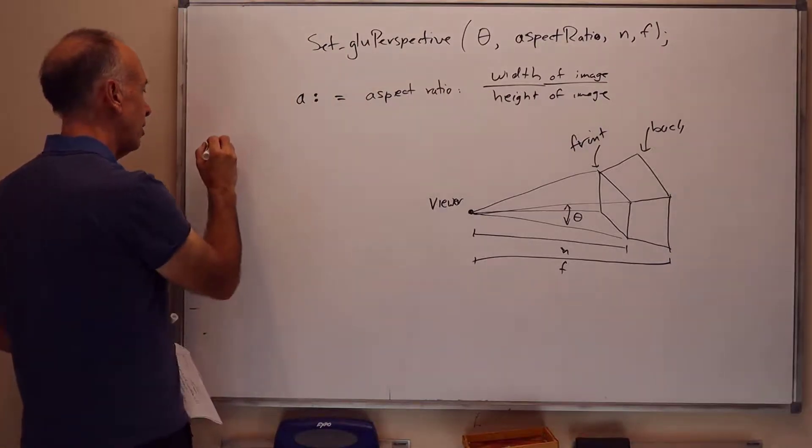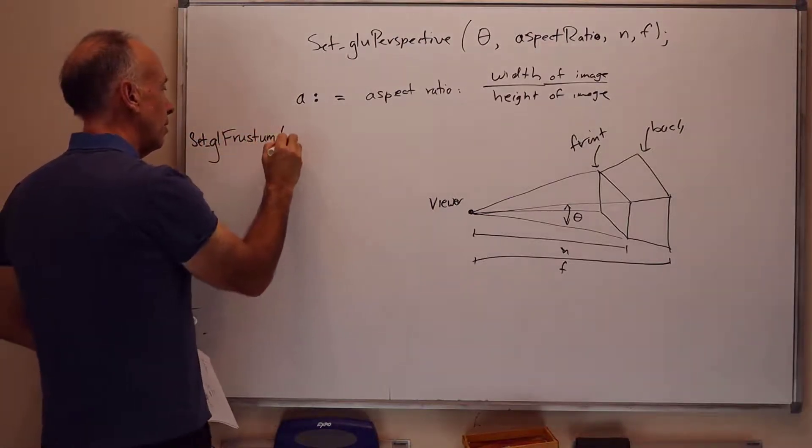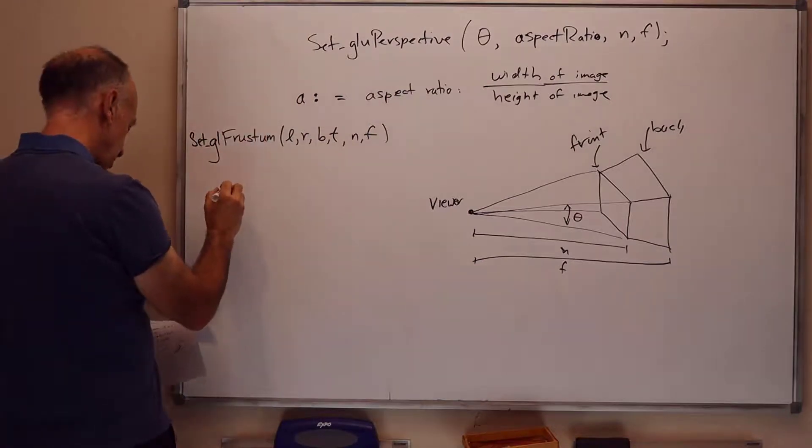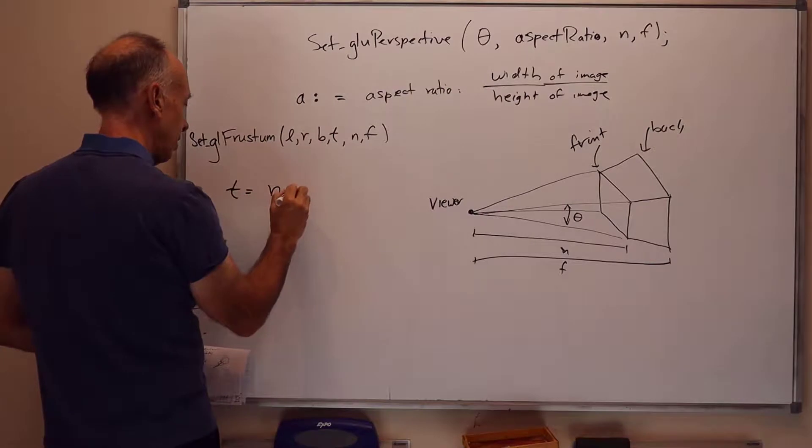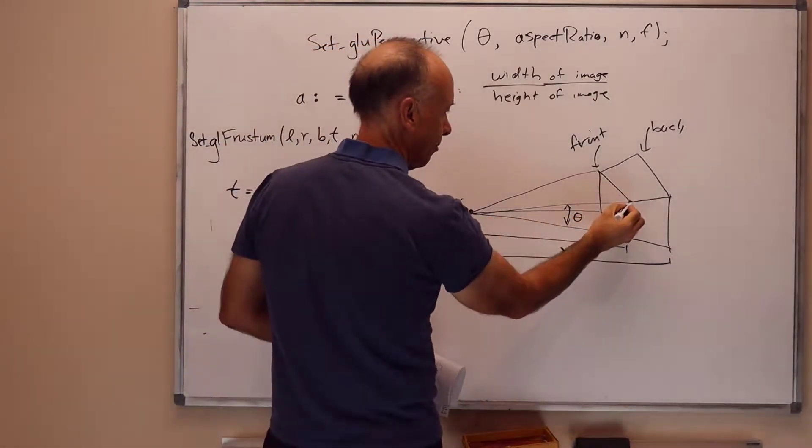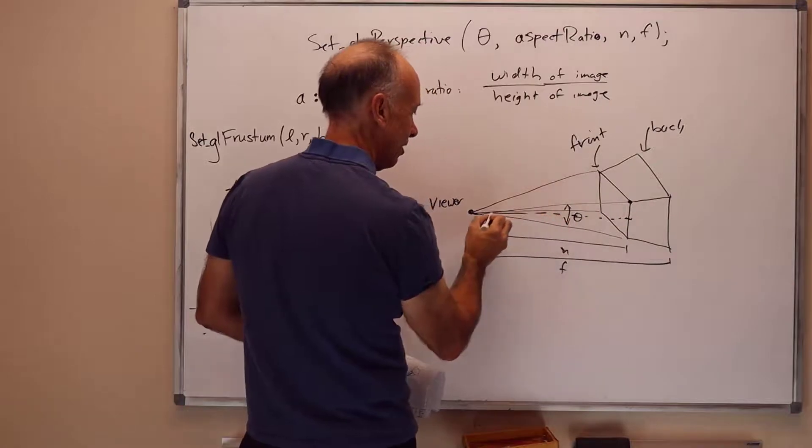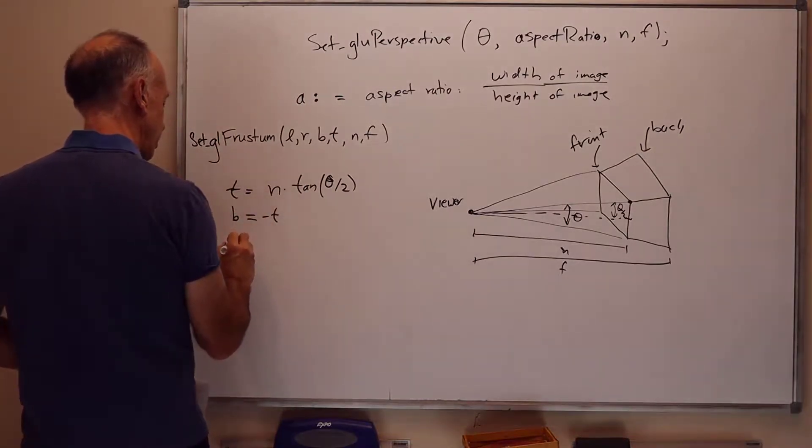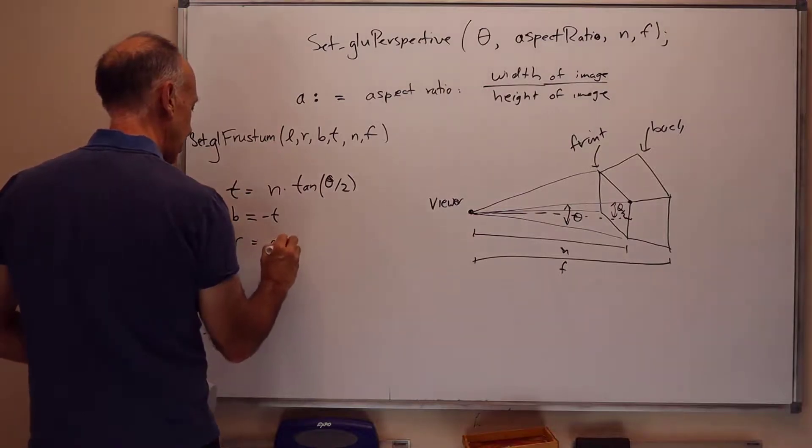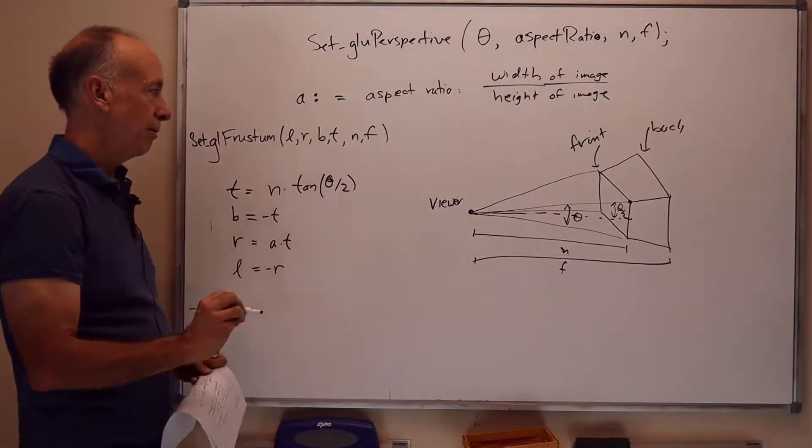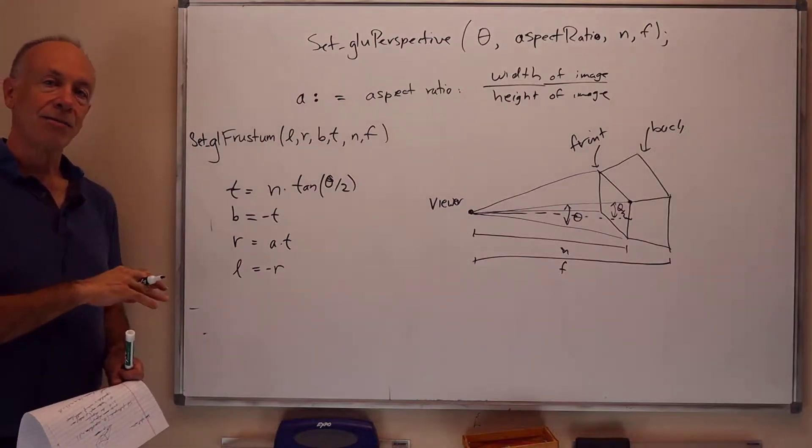Let's use A for the aspect ratio so I don't keep writing aspect ratio out so big. Then we have that the other parameters, this is the same as set GL frustum left, right, bottom, top, near, far. Near and far like that. Top turns out to be n times tangent of theta over 2, which is just because the top is the y value up here. So you take half of the value. It's theta over 2. And then bottom is minus top. And right is A times T. Aspect ratio times T. And the left is minus R. And the near and the far are the same as before. So GLU perspective just calls GL frustum with these parameters.